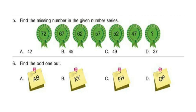Question 6. Find the odd one out. The correct answer is option C: FH. Here AB, XY, and OP come together consecutively in the alphabet series, but FH has G in between them.